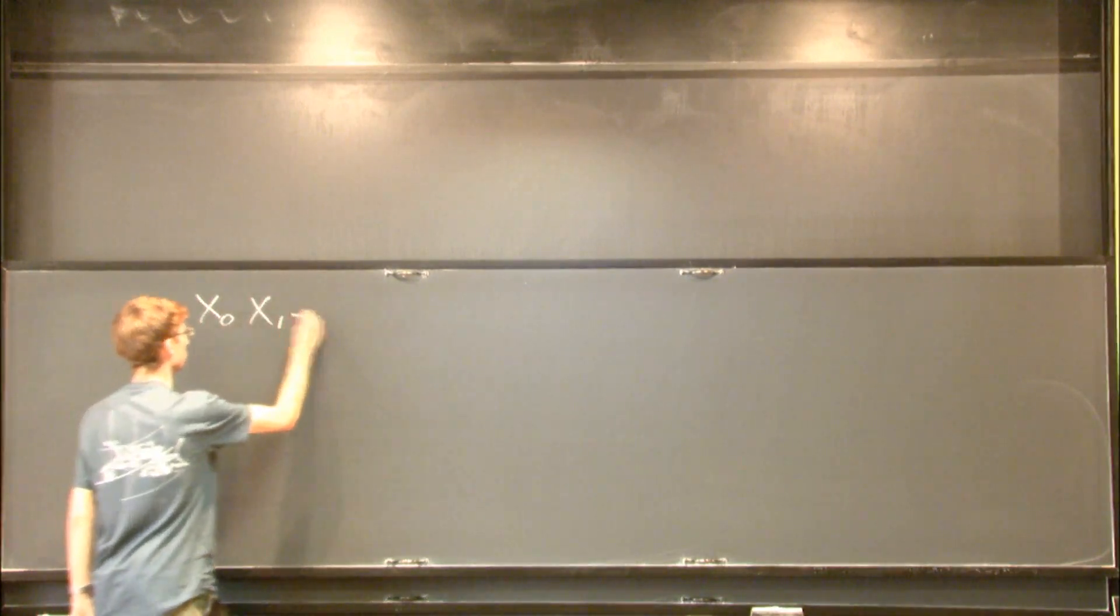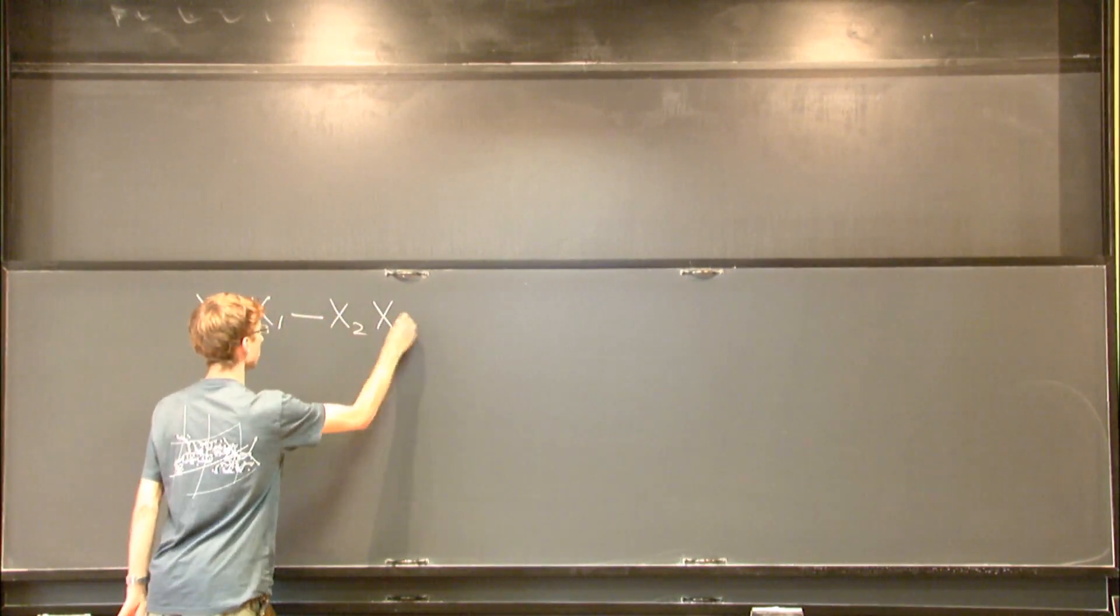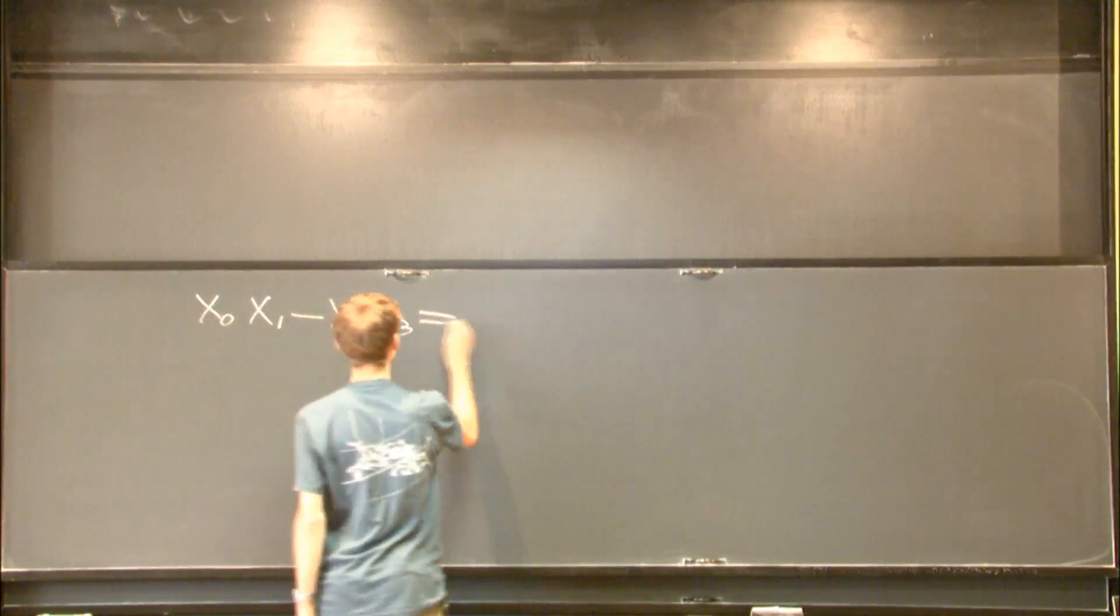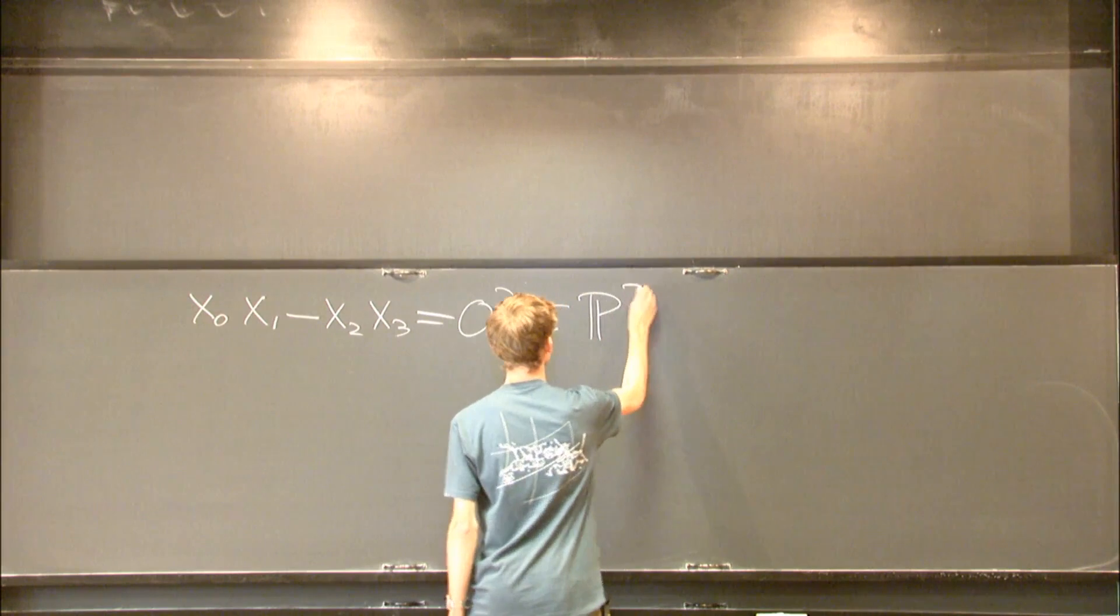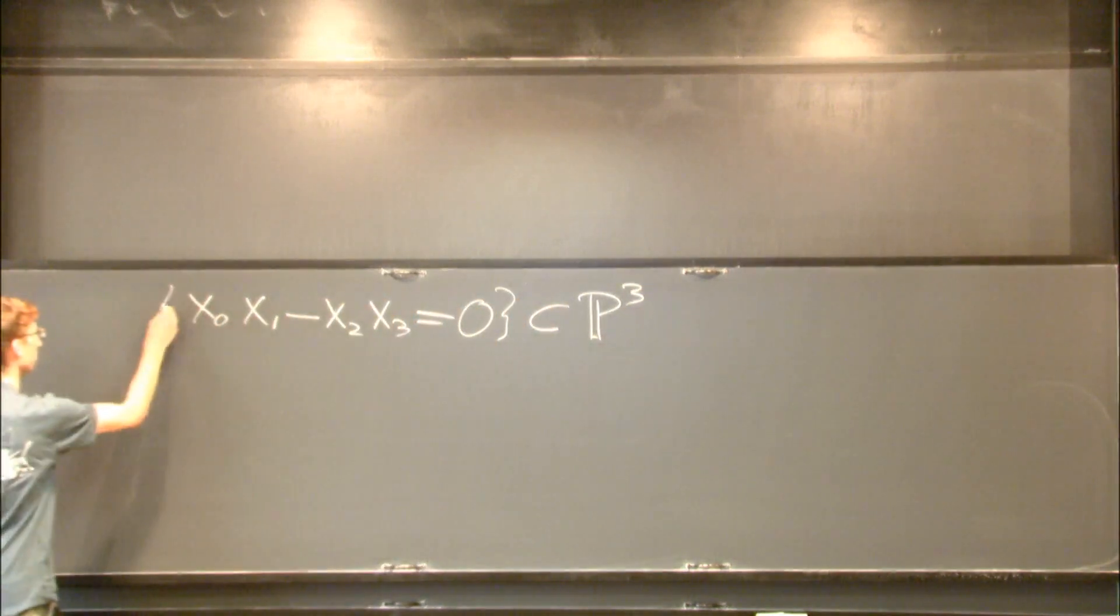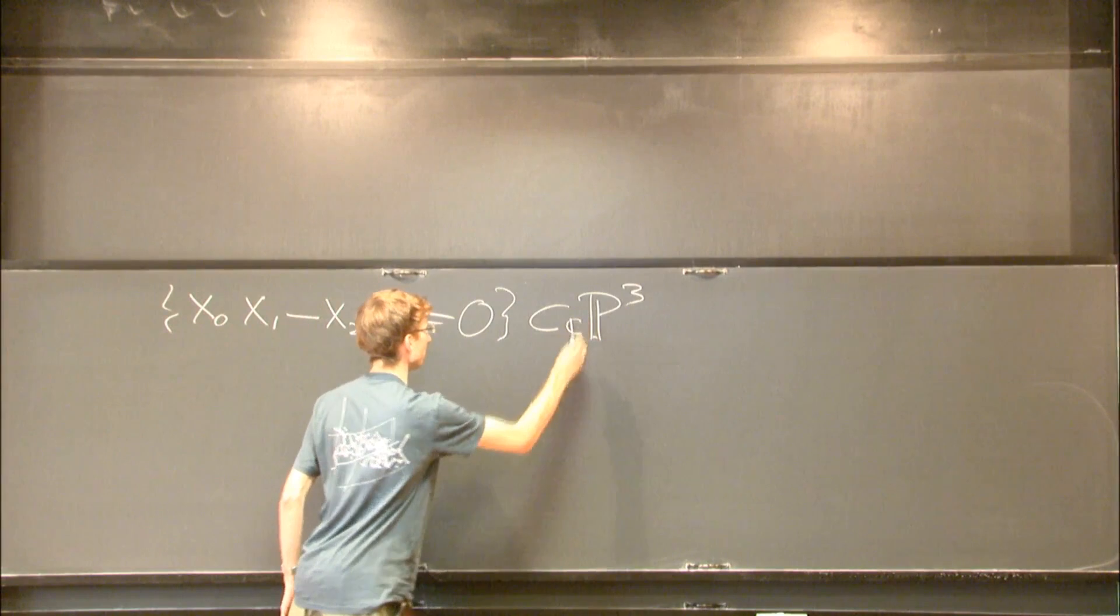In my case, it's a quadratic equation in three variables. If you look at its zero locus, it defines a hypersurface in P3 - here I mean complex projective three space.